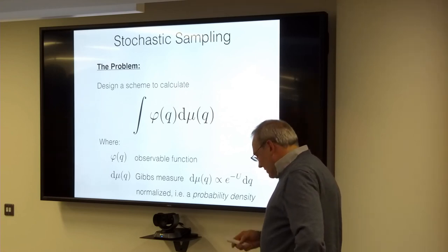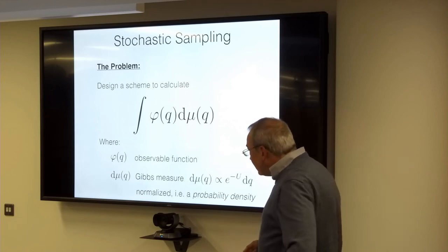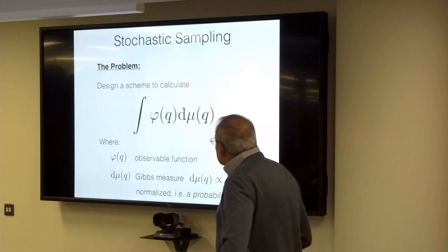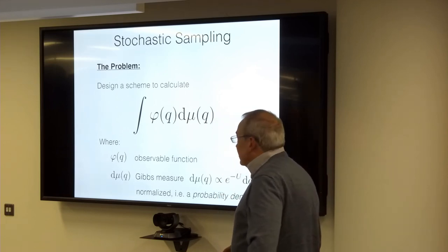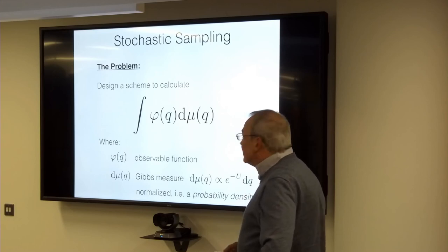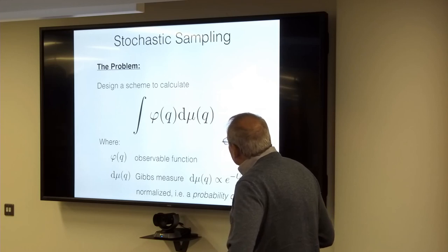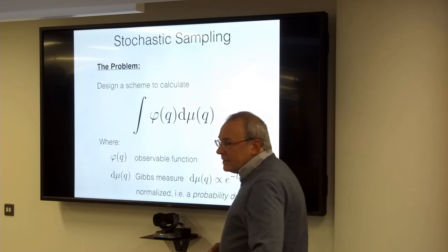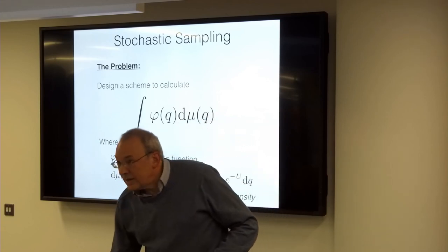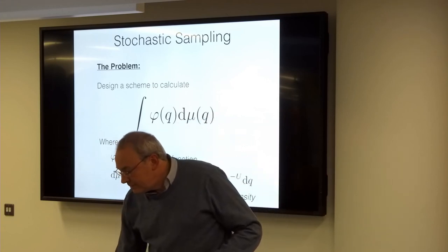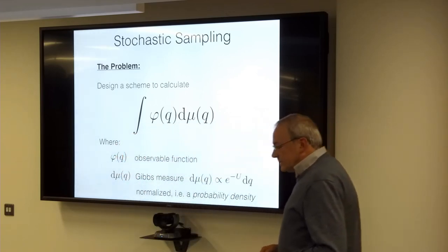Here phi is the observable function, and d-mu is typically described as a Gibbs measure — it's just any probability measure that we can normalize, written as exponential of minus U dq. The density is exponential of minus U, where U is some arbitrary function. We can think of it as an energy function in physics, or a likelihood function in statistics.